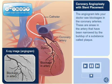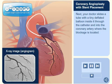These are areas in the artery that have been narrowed by the buildup of a substance called plaque. Next, your doctor slides a tube with a tiny deflated balloon inside it through the catheter and into the coronary artery where the blockage is located.